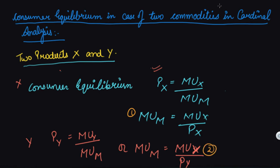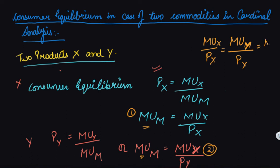Taking the common factor out from both equations, we get the combined condition: MU_x divided by price of X equals MU_y divided by price of Y equals MU_m (marginal utility of money). This is the point of consumer equilibrium in the case of two commodities.